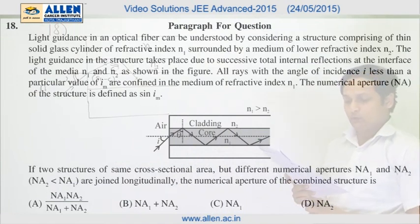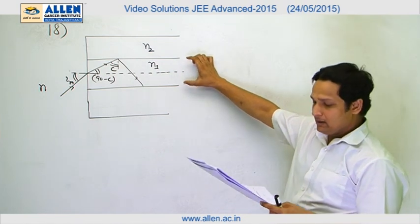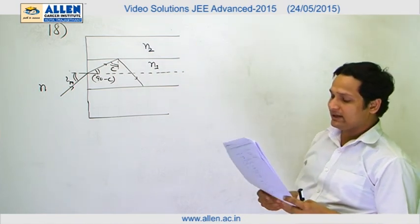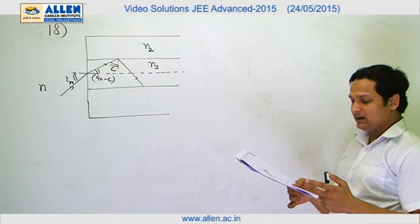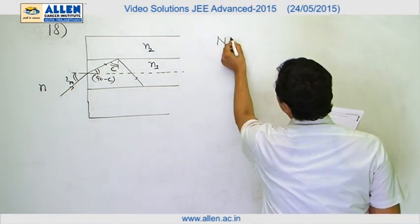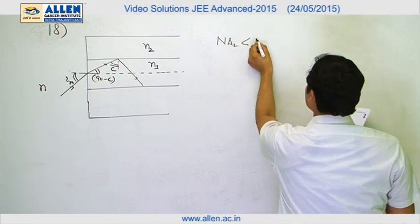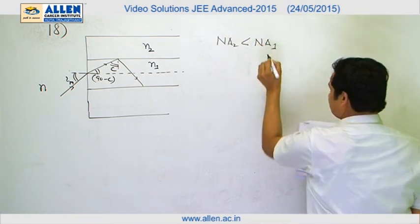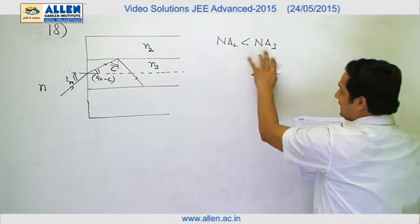Question number 18: if two structures have the same cross-sectional area but different numerical apertures NA1 and NA2. We have different numerical apertures, NA1 and NA2. It is given that NA2 is less than NA1. NA2 less than NA1 means